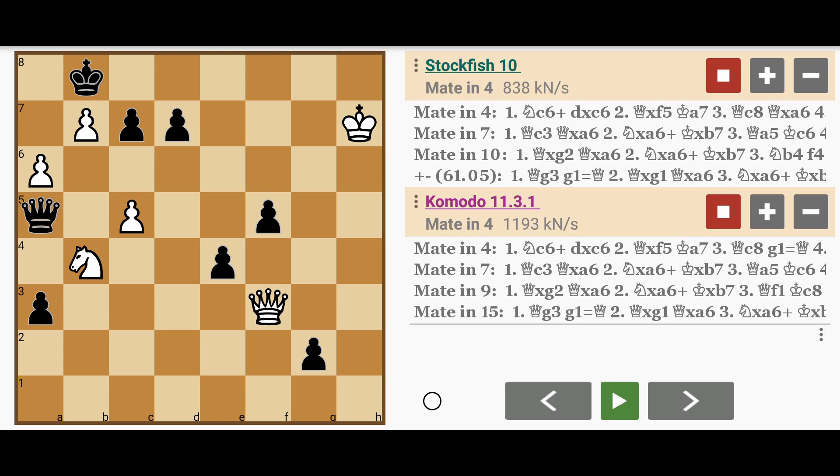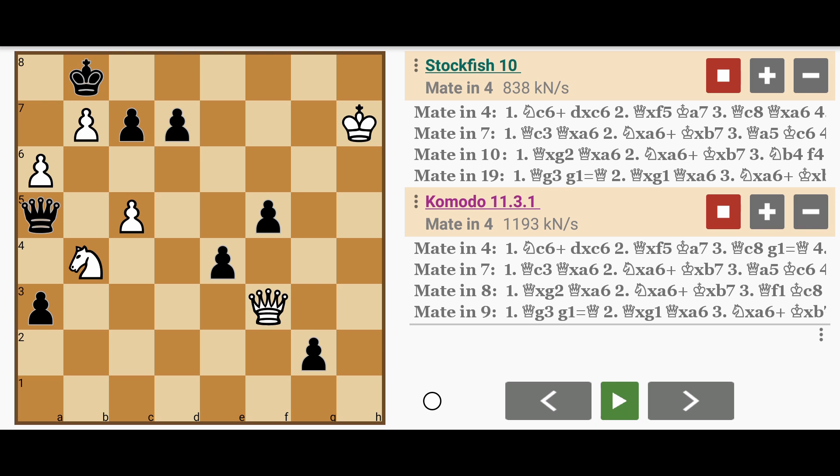The next closest mate is a mate in seven. Under time controls, you probably want to get this right or you could lose the game. But since this is a puzzle, we can take our time and enjoy it.